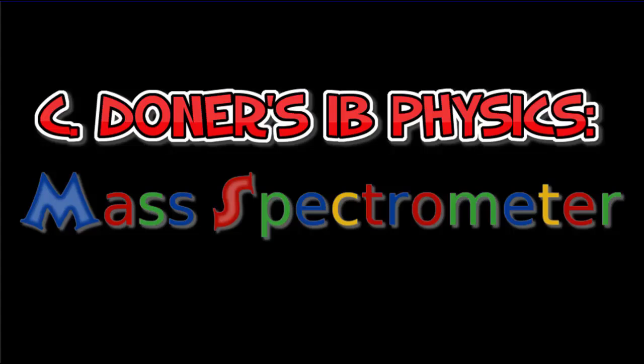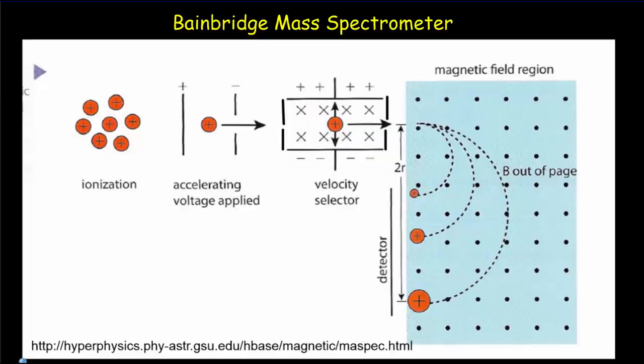Today we're going to look at how a mass spectrometer works. The spectrometer that we're going to look at is called the Bainbridge mass spectrometer. It's one of the oldest and simplest of the mass spectrometers and there's actually a lot of really interesting engineering details to it.